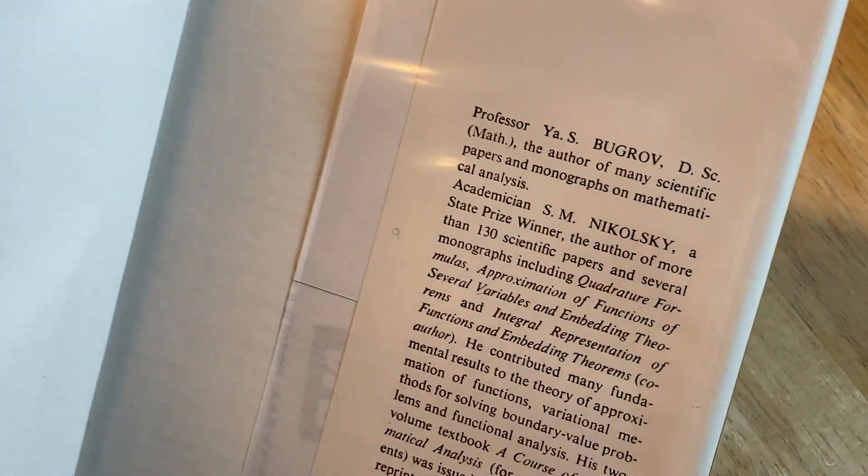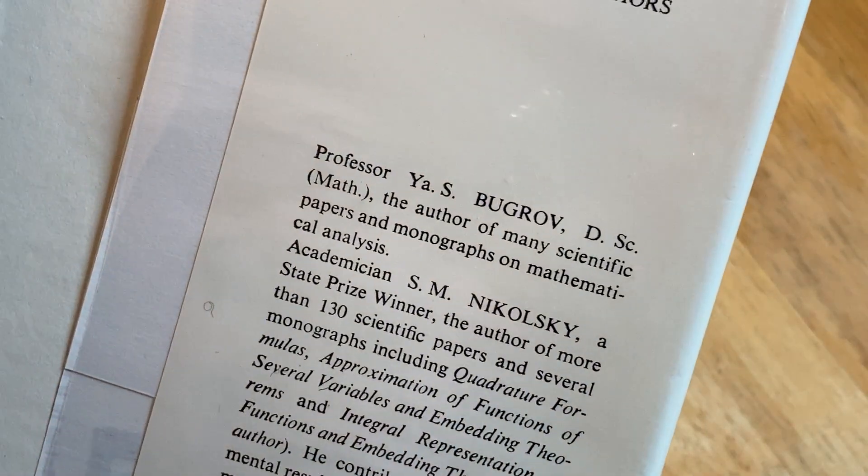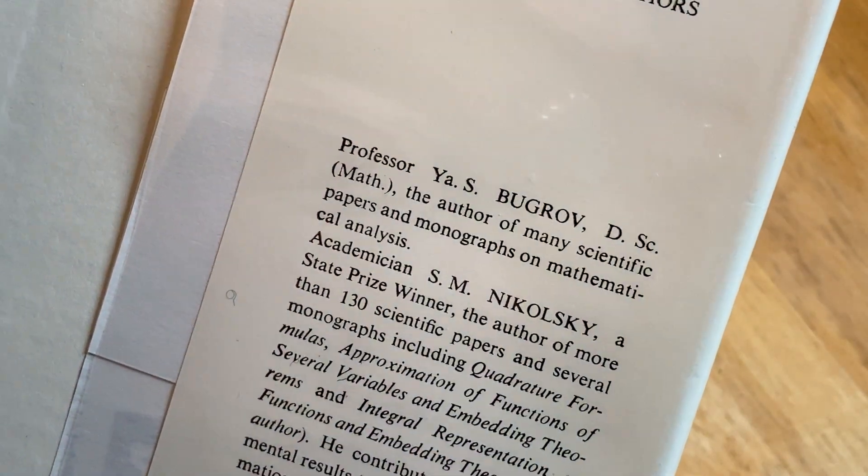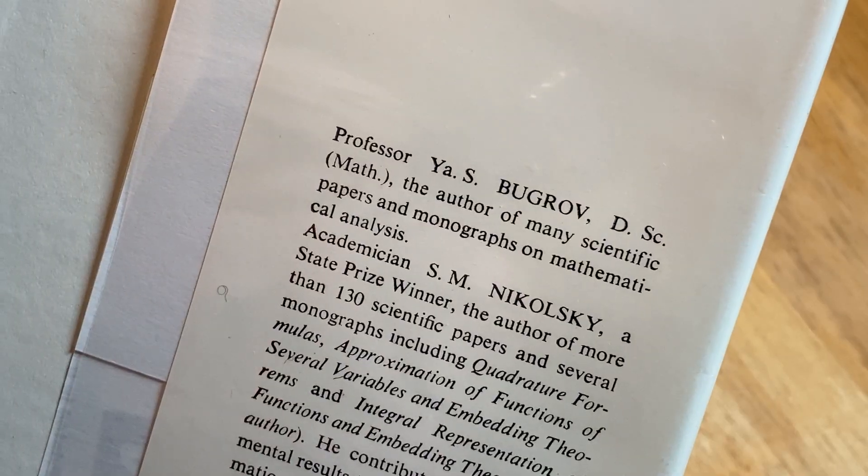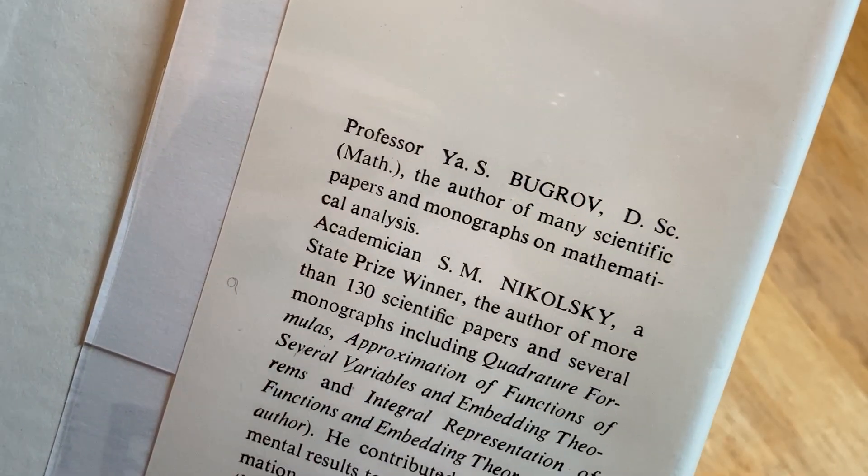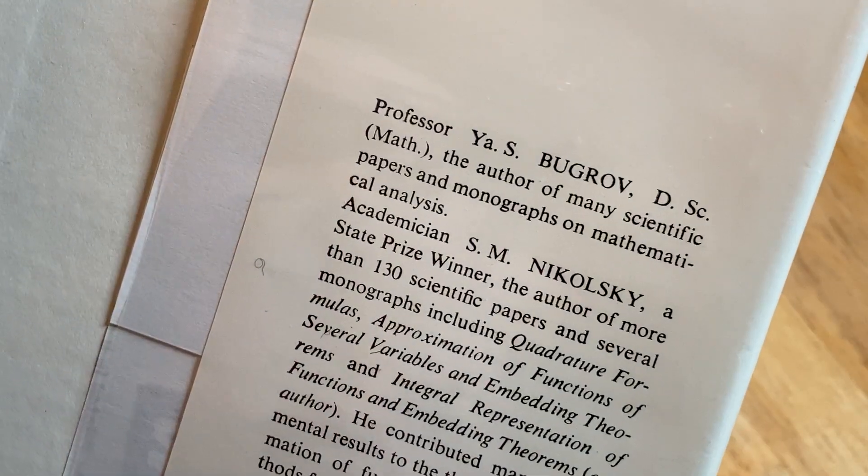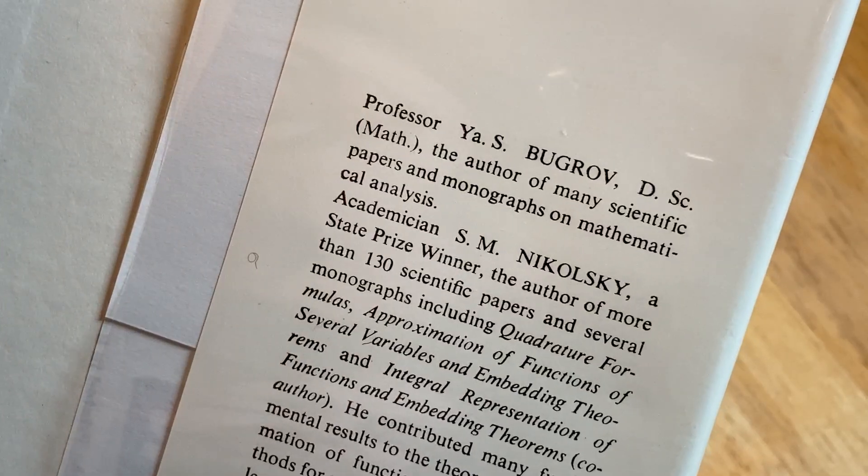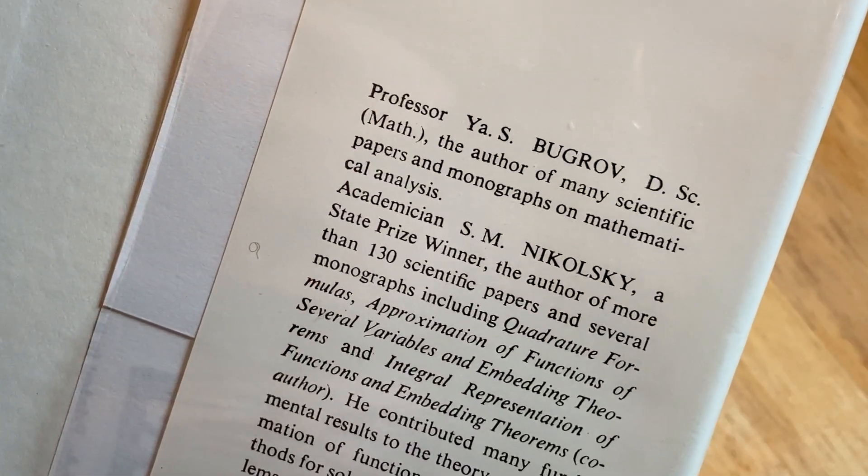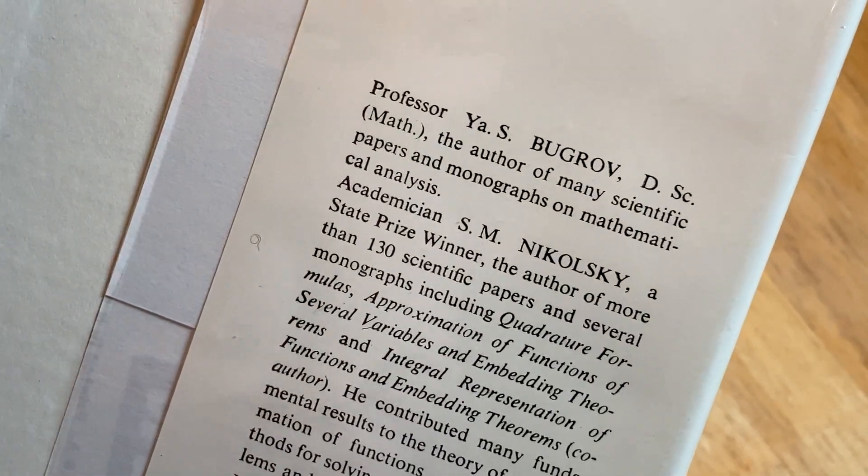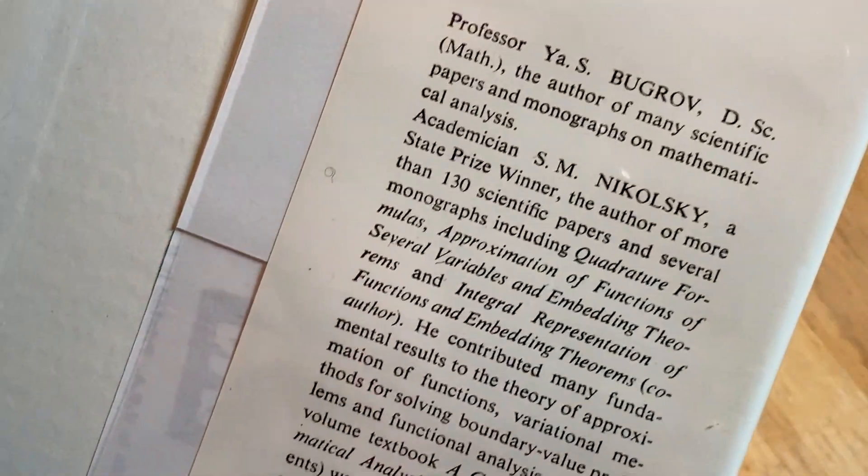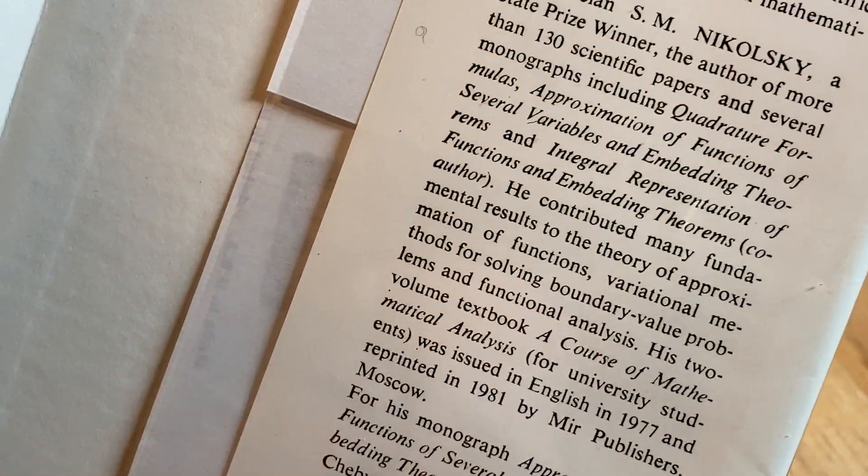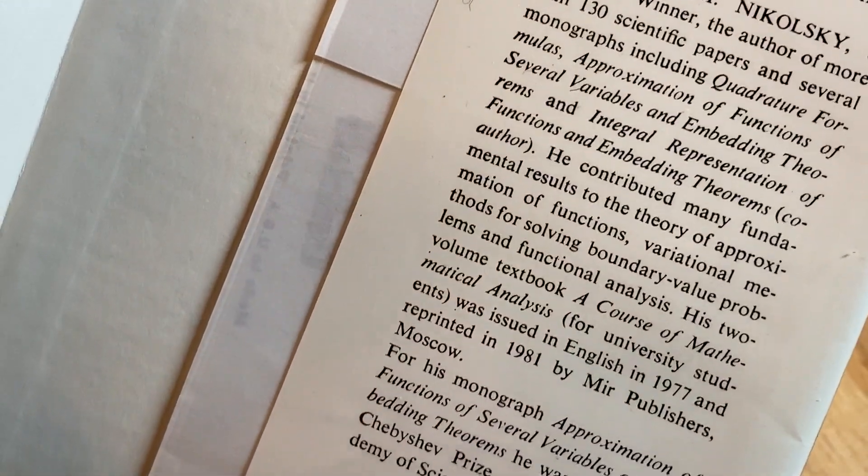What's it say back here? Oh, here it talks about these professors. Bugrov is the author of many scientific papers and monographs of mathematical analysis. Nikolsky is a state prize winner, author of more than 130 scientific papers. Wow. And several monographs.